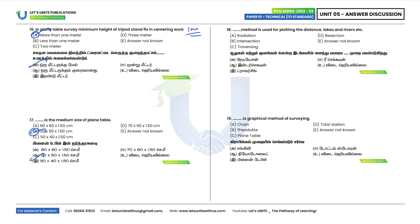Eighteenth question: Which method is used for plotting inaccessible points such as lakes and rivers? These inaccessible points are plotted using the intersection method. Option B is the correct answer.